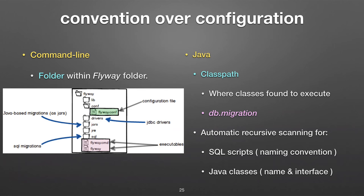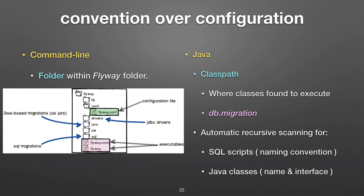Flyway uses a philosophy of convention over configuration. If you're doing Java and creating Java classes to run, there's a 'jars' folder because in Java we create .jar files. There's already a folder with JDBC drivers. There's a SQL folder — that's where you put your SQL files. There are executables you don't really care about. There's a 'conf' folder with a flyway.conf where you can do configuration if you need to. But I haven't done that — I just drop my SQL files into the folder and I'm done.